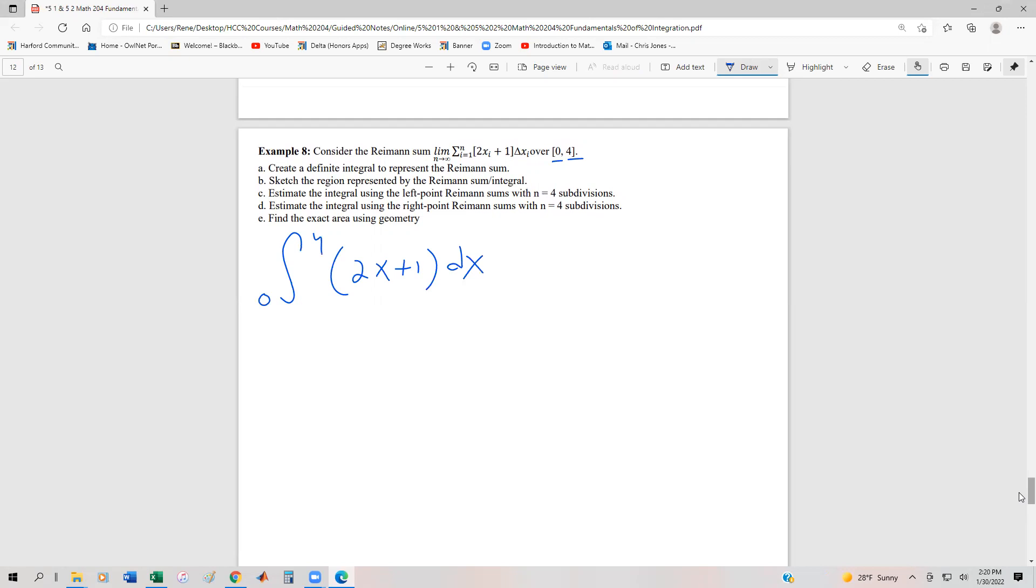The region represented - this is a linear function. When x is 0, that means y is 1. If we plug 4 in for x, that gives us 9 for the output. So we have the point (0,1) and at x=4, the function reaches 9. It's a linear function, so this is what our region looks like.